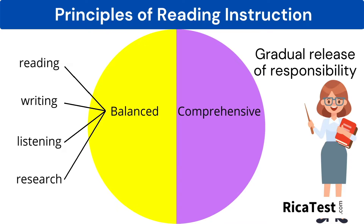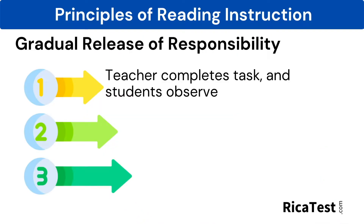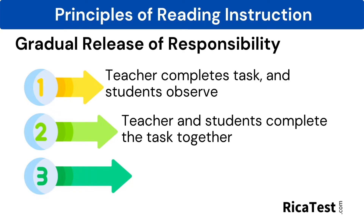Comprehensive instruction uses the four key components from the balanced instruction to implement the gradual release of responsibility instructional strategy, which is a short series of lessons. In the first lesson, the teacher models the activity using think-alouds while the children watch and observe. In the second lesson, the teacher splits the responsibility of completing the task with the students, so the teacher and students complete the task together.